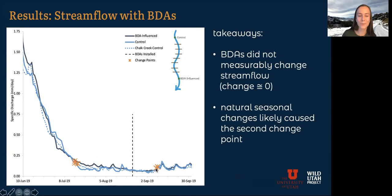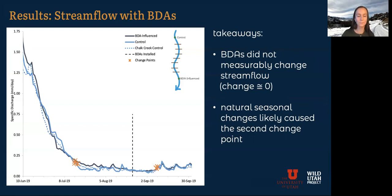Thinking just about this increase in stream flow, which was at first a little bit confusing because we don't expect a large increase in stream flow, especially if you install dams — we guessed that this was just natural seasonal changes that caused the second change point. So as fall starts, vegetation slows down, it's not drawing as much water from the ground and from the stream, the days are shorter and cooler, and so stream flow can rebound a little bit right there.